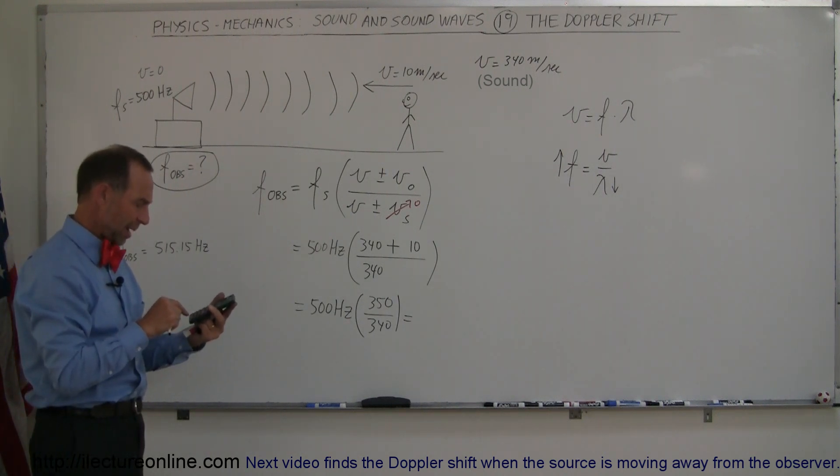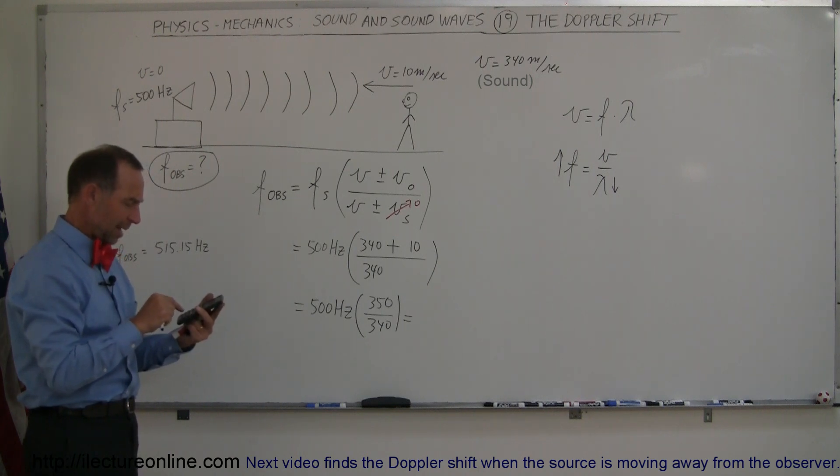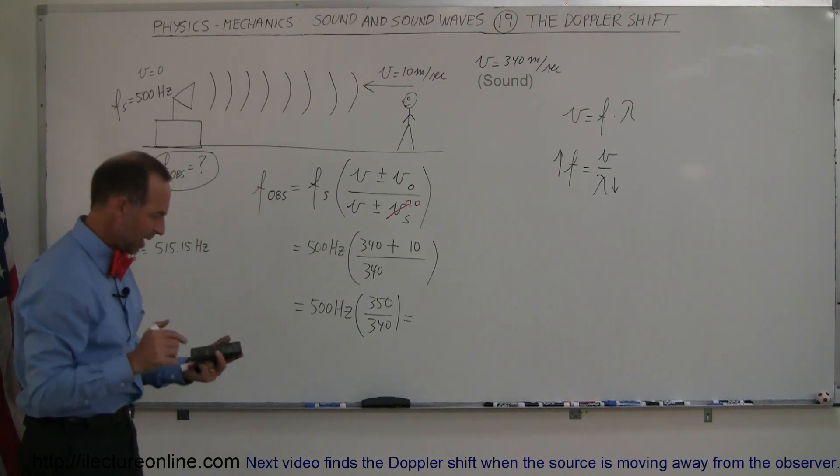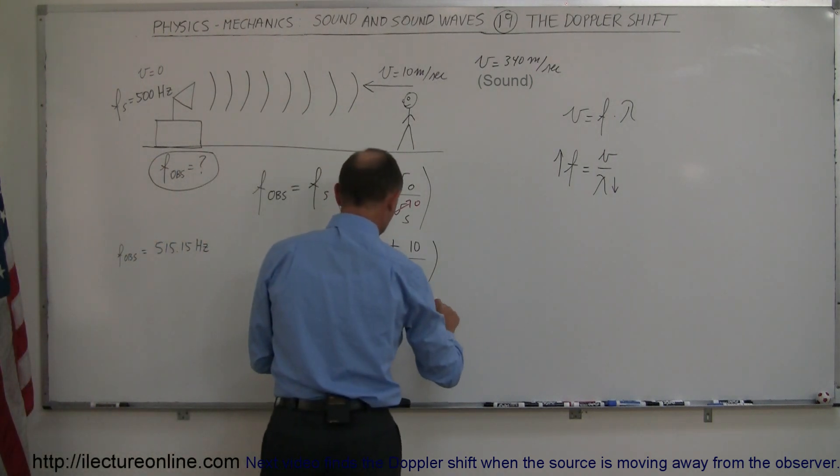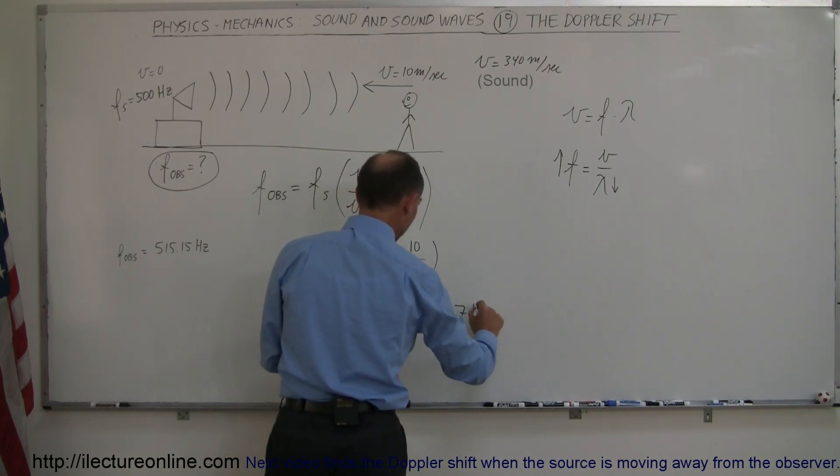So this would be 350 divided by 340 times 500 equals, and here we get 514.7 Hertz.